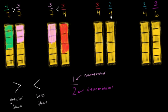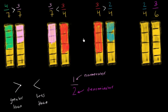Now let's compare these two. We have the same denominator but different numerators: 3 fourths versus 2 fourths. We've already looked at 3 fourths — we can shade in three of the fourths. Then for 2 fourths, we only shade in two: one, two. So 2 fourths is clearly the smaller number and 3 fourths is the greater. We can write 3 fourths is greater than 2 fourths.